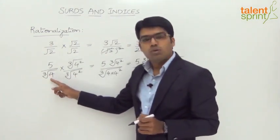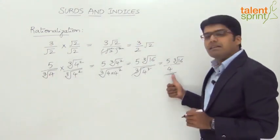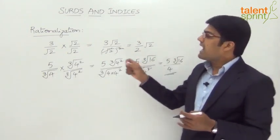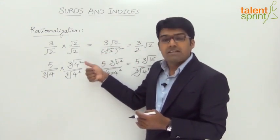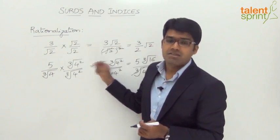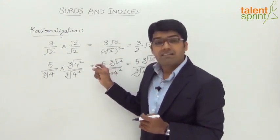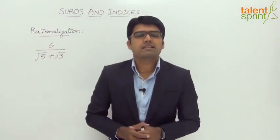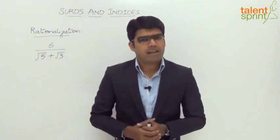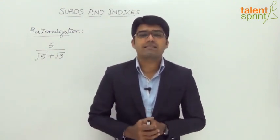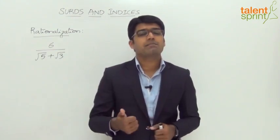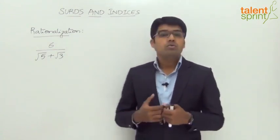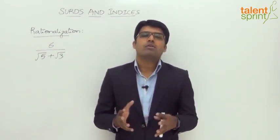As you see, the surd — cube root of 4 — in the denominator has been eliminated. We are left with only 4 in the denominator. This is how we multiply both numerator and denominator of a fraction with the rationalizing factor. The term that we multiply with is known as the rationalizing factor. In the previous two examples, we saw how to eliminate surds when there was only one surd in the denominator. Now let us understand how to deal with multiple surds in the denominator of a fraction.